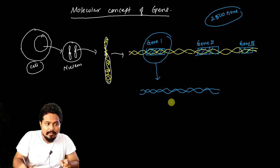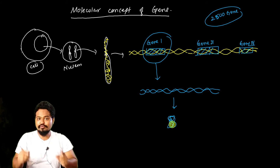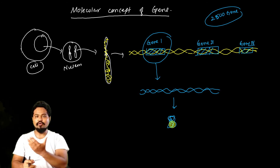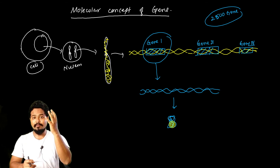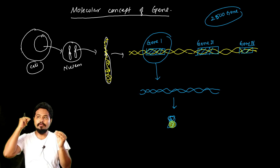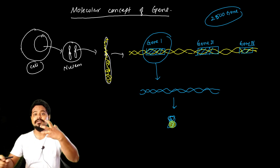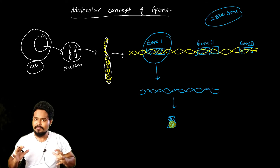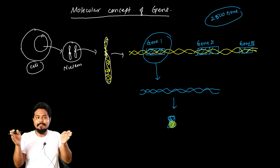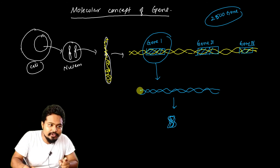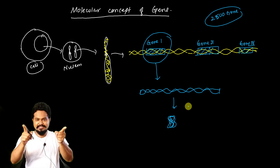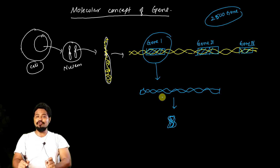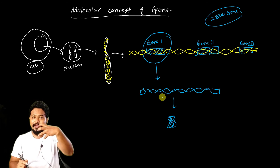At the molecular level, a gene codes for a protein. This protein determines characteristics — skin color, hair color, behavior. The gene produces a protein, and that protein determines the characteristic. This is the molecular concept of gene.